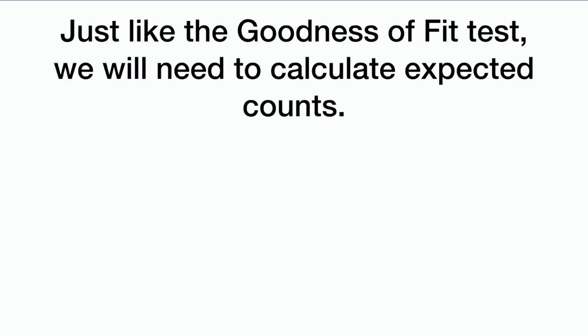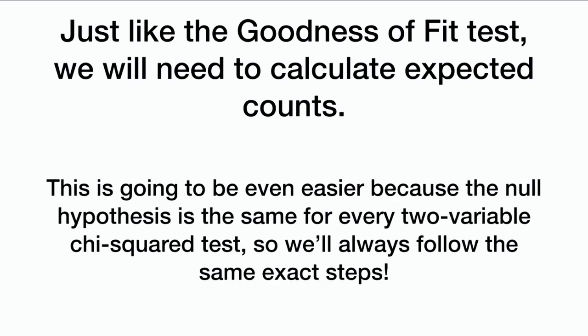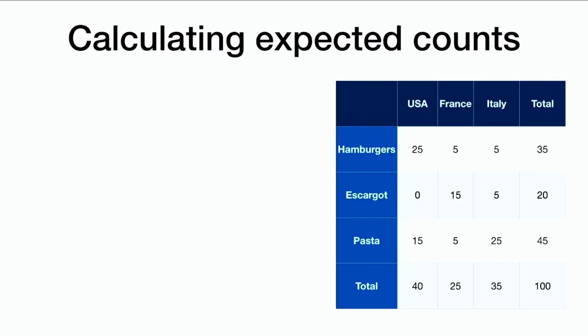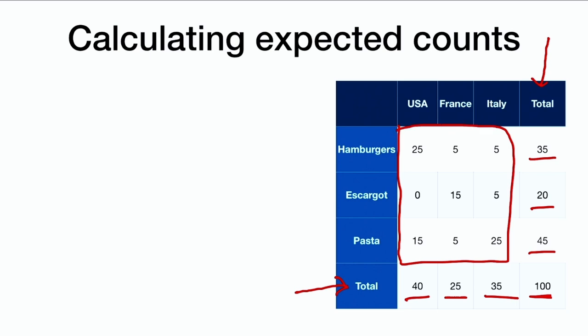How do we actually do this test? Just like the goodness-of-fit test, we need to calculate expected counts. We don't have a predefined distribution like one-sixth for die rolls, but it's actually easier to compute expected counts here because it's the same calculation for every test since we're always testing independence. Here is our table of country versus favorite food. You'll notice we also have the margins — the totals of the rows — telling us how many people like hamburgers, escargot, or pasta, and how many people are from the US, France, or Italy. We have 100 people in total.